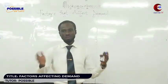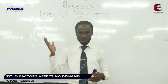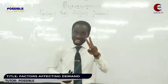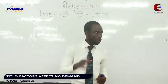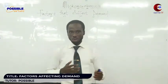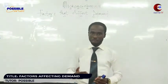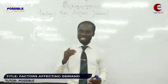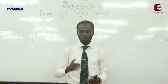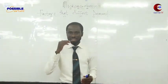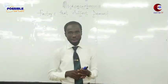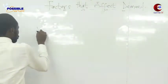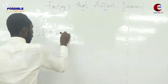Now, factors affecting demand — we have a lot of factors like season, taste and preferences, and many more. But today I'm going to tackle only two disturbing factors. The rest, go and search for them. The disturbing ones are: number one, prices of other related commodities, and number two, income of consumers.